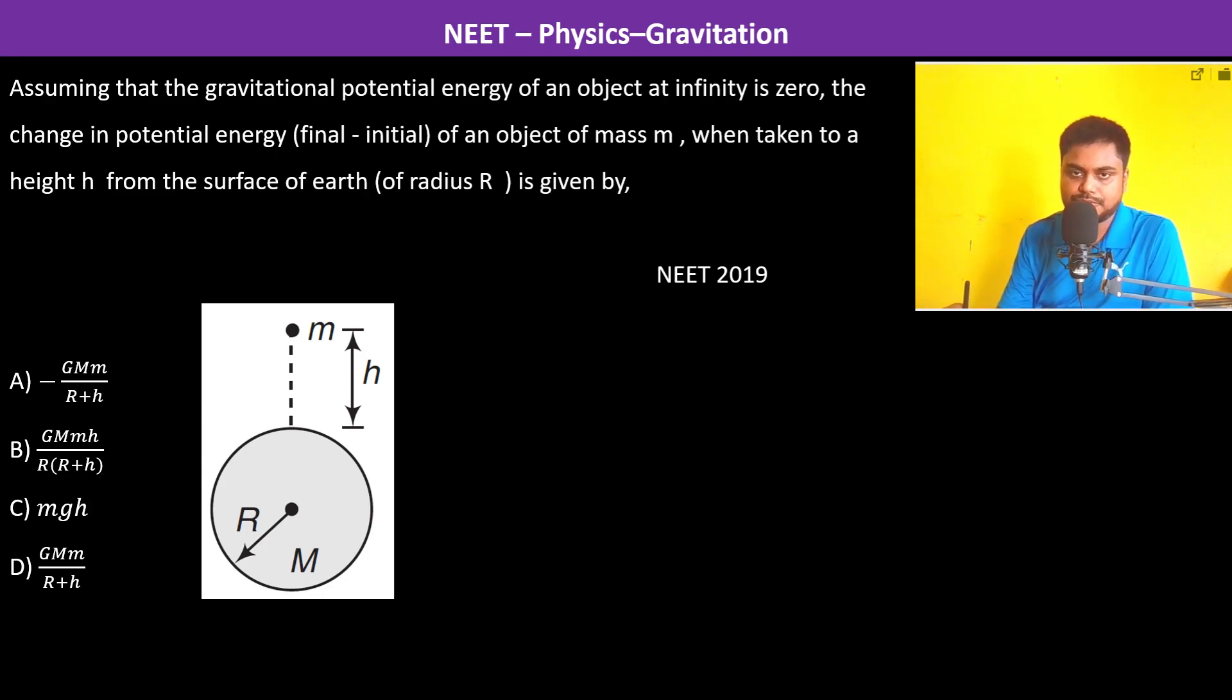Assuming the gravitational potential energy of an object at infinity is zero, the change in potential energy of an object of mass m taken to a height h from the surface of the earth: at the surface of the earth we have the gravitational potential energy is equal to minus G M_e m divided by radius of earth.